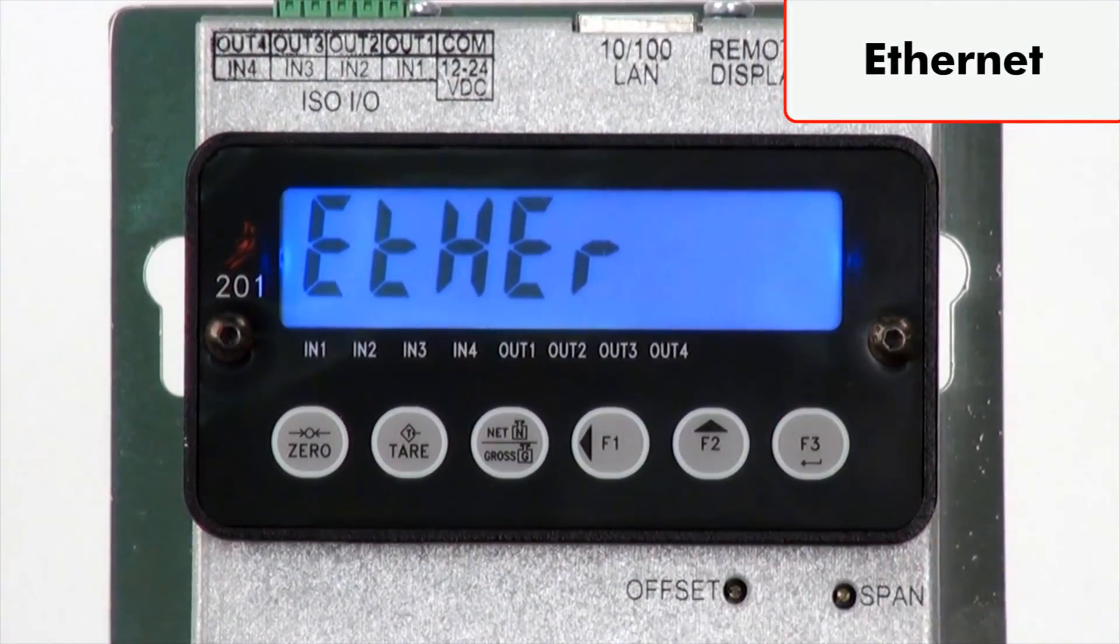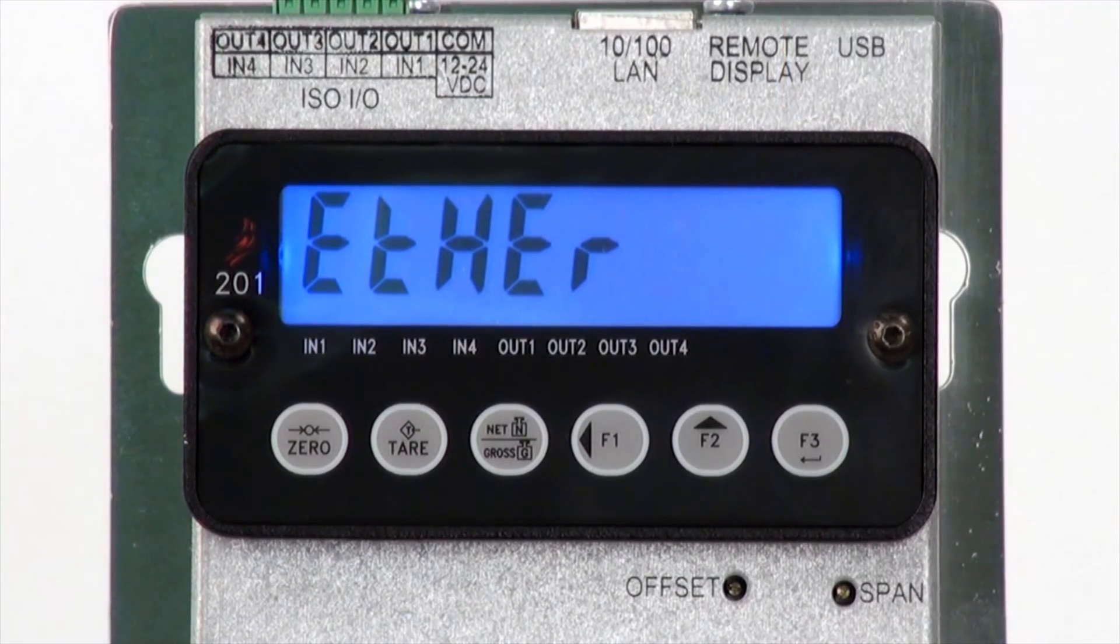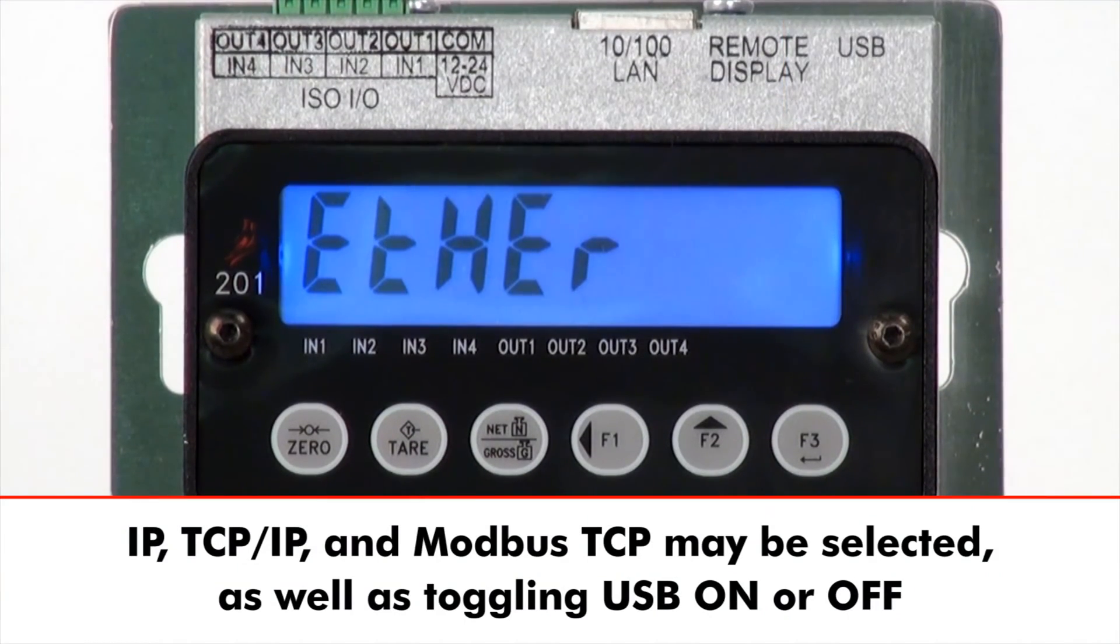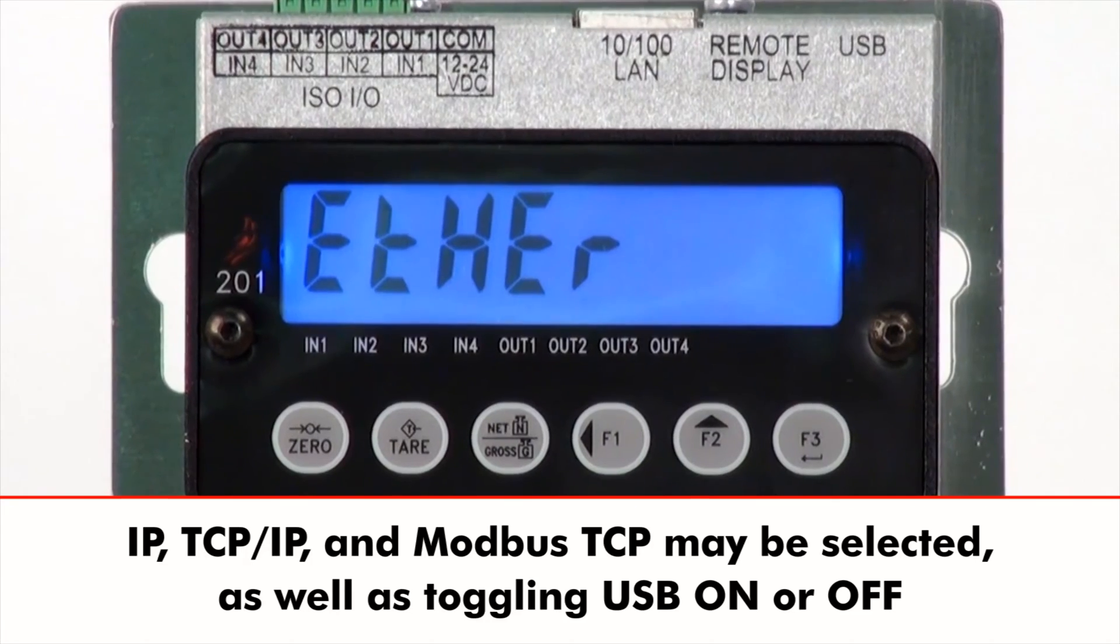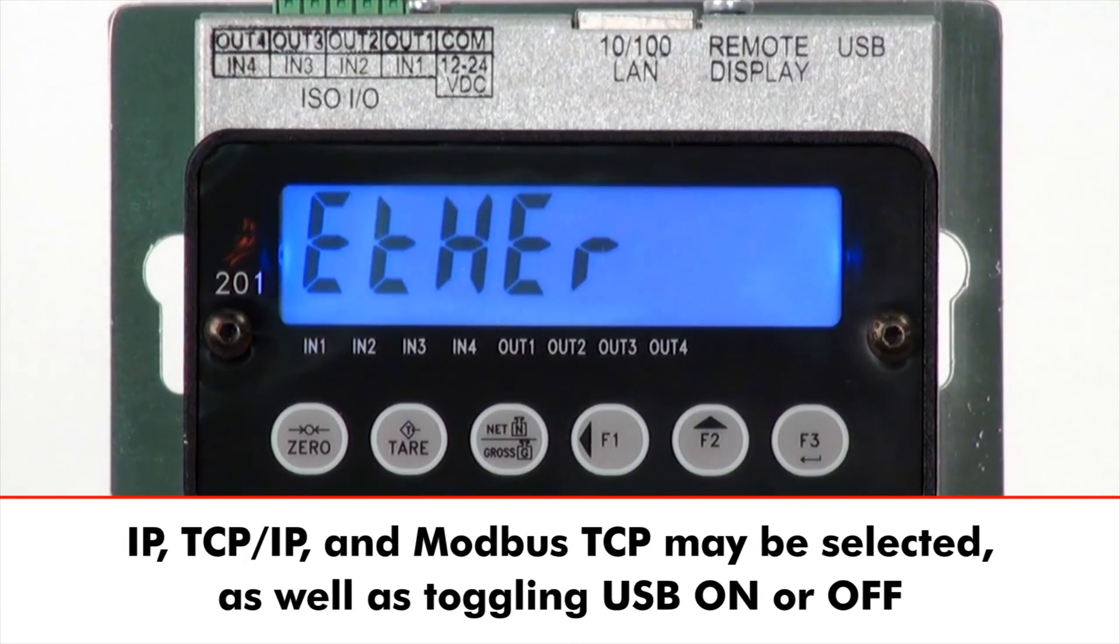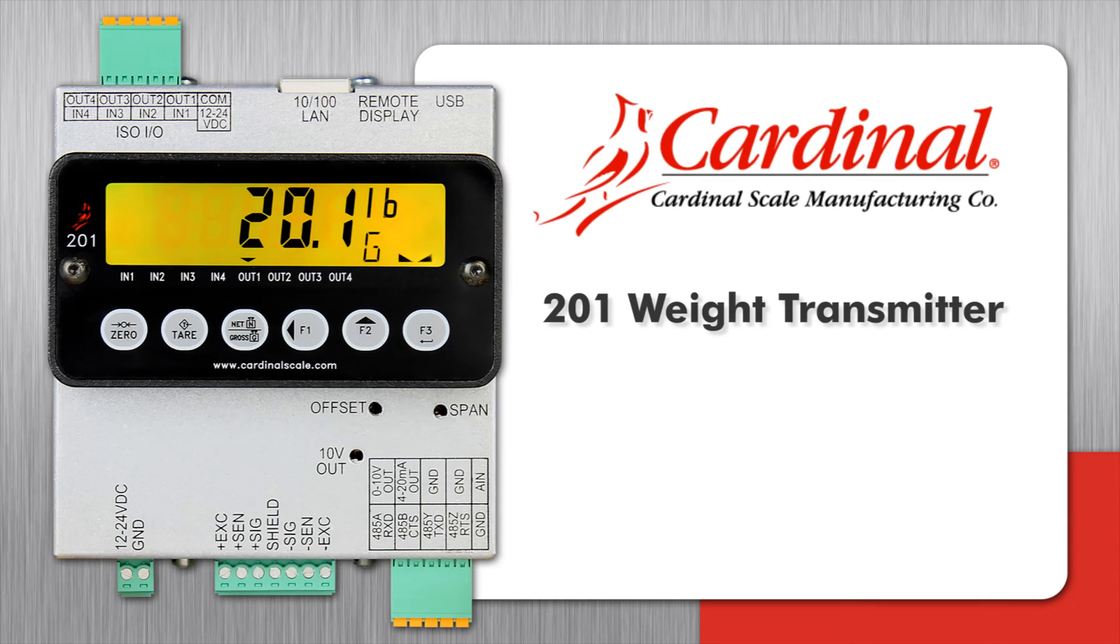Ethernet and USB parameters include all of the settings for the Ethernet and USB ports. IP, TCP/IP, and Modbus TCP may be selected, as well as toggling USB on or off.